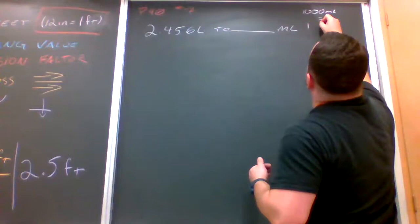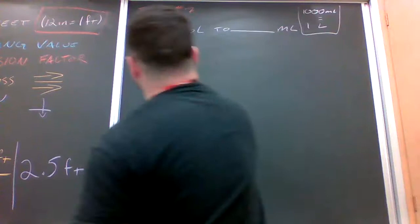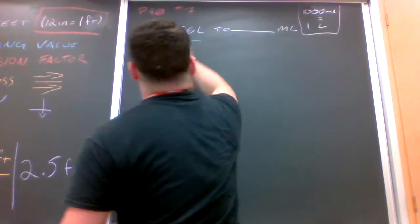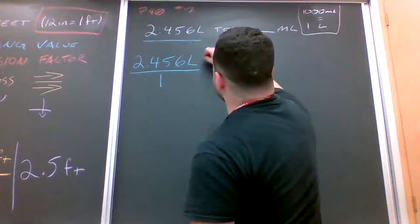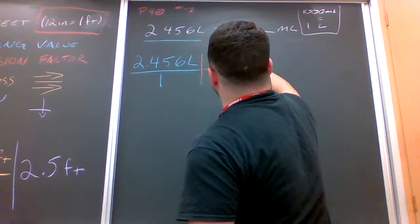So there is the conversion factor for this one right here. Step 1, state the starting value: 2.456 liters. Then state the conversion. Now liters is what I want on the bottom, so I'm going to stuff 1 liter to the bottom and put 1,000 milliliters on top.